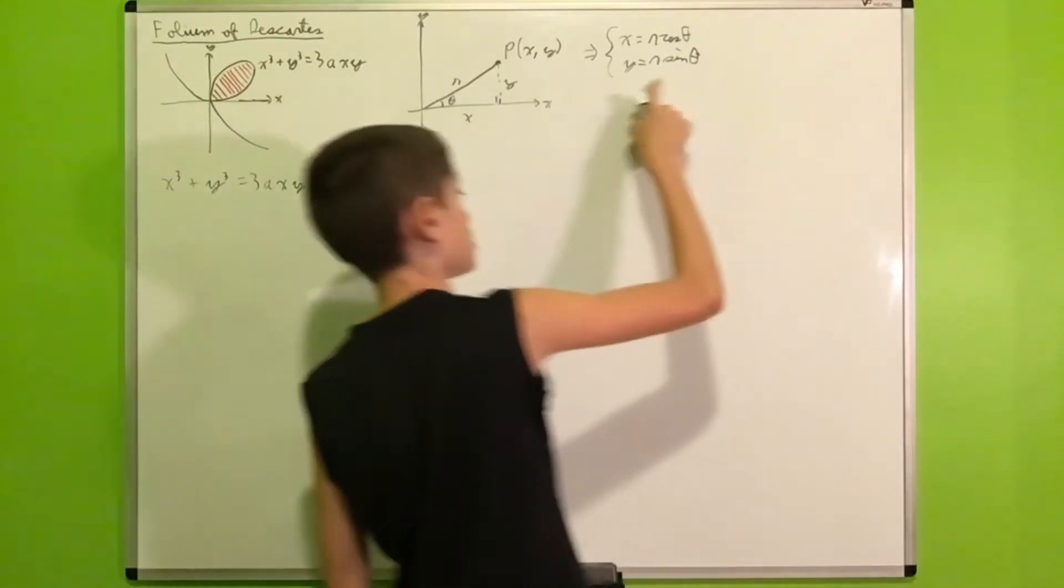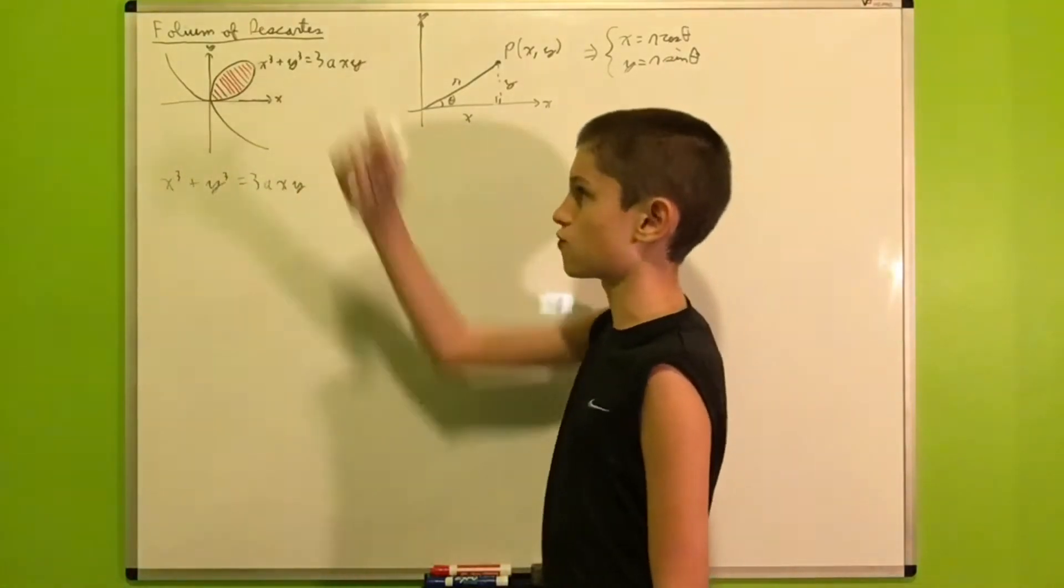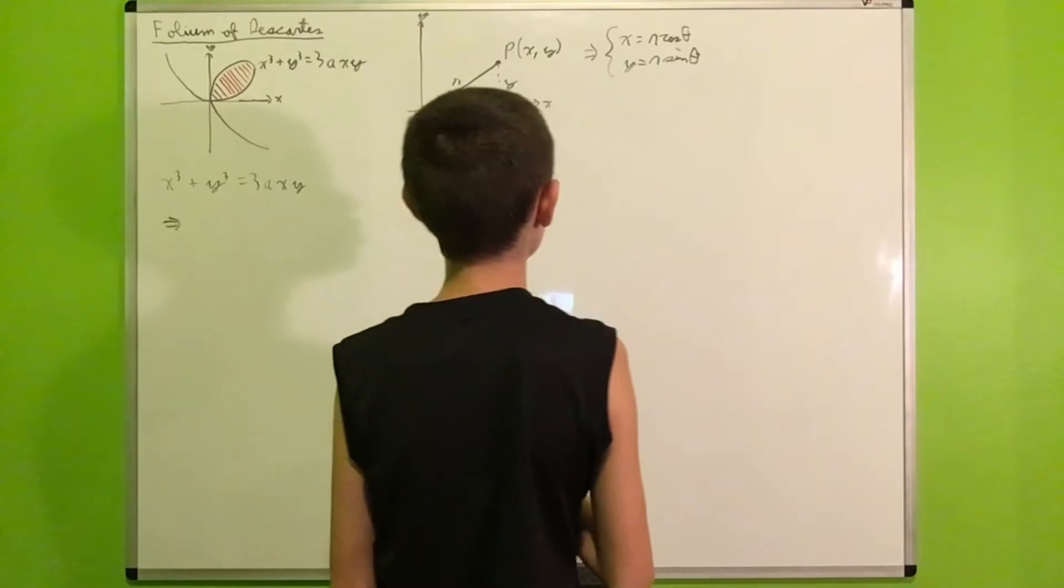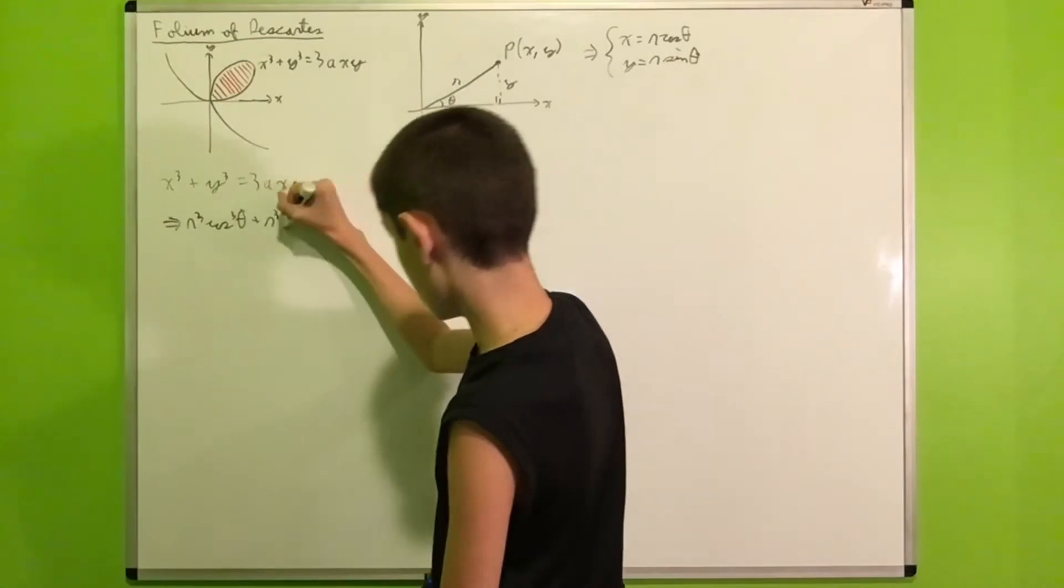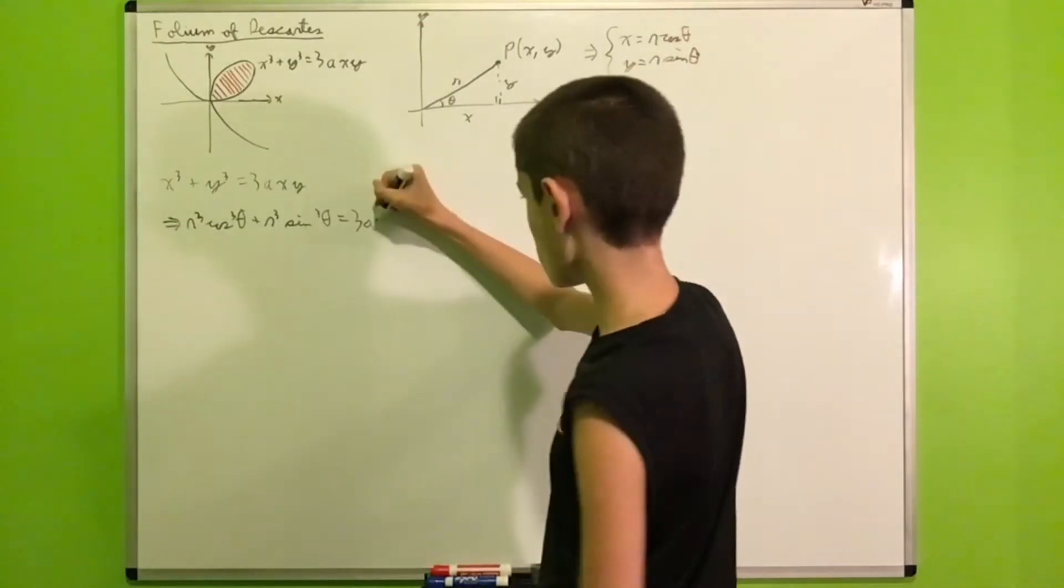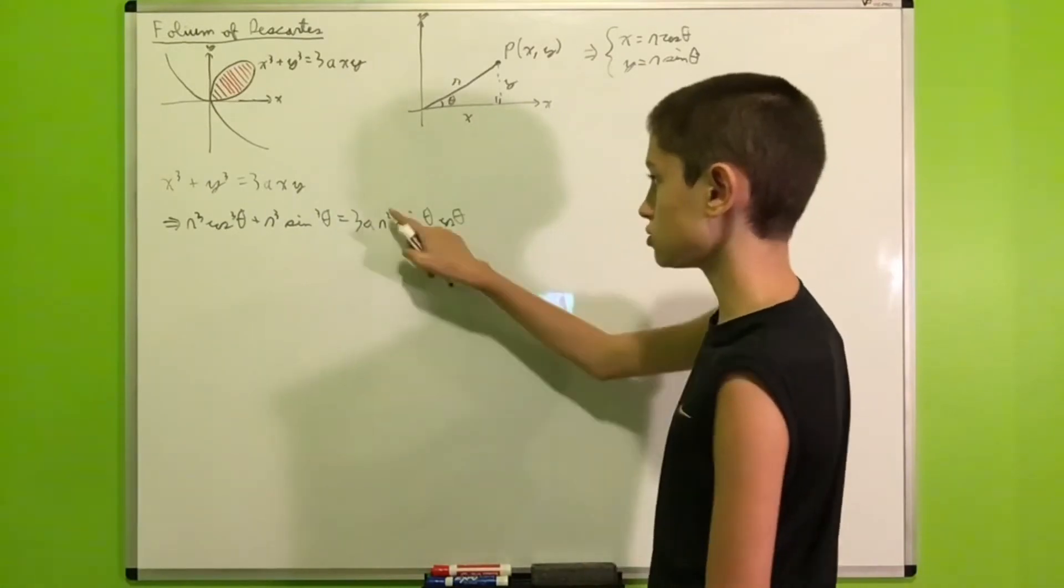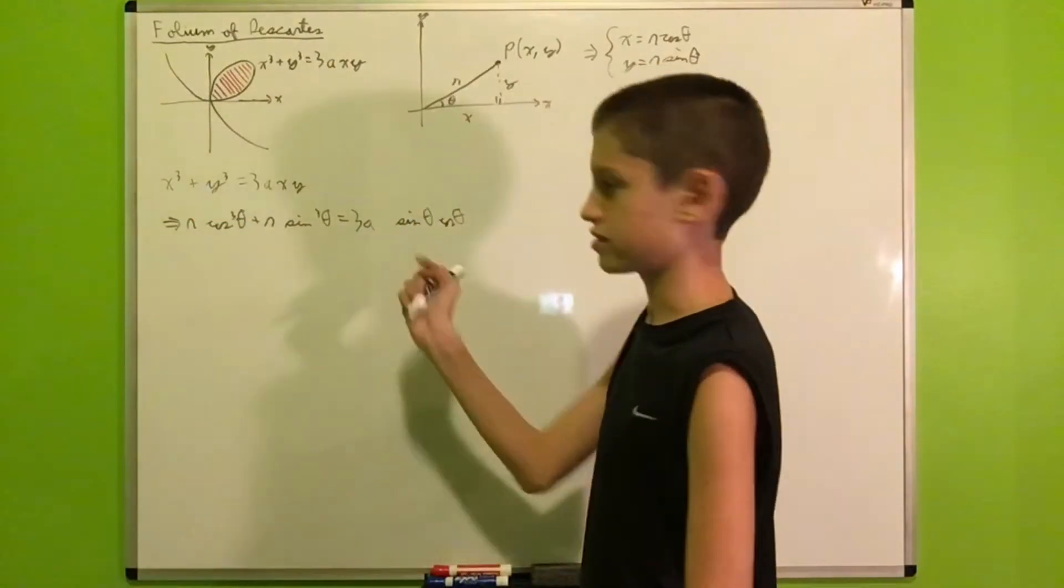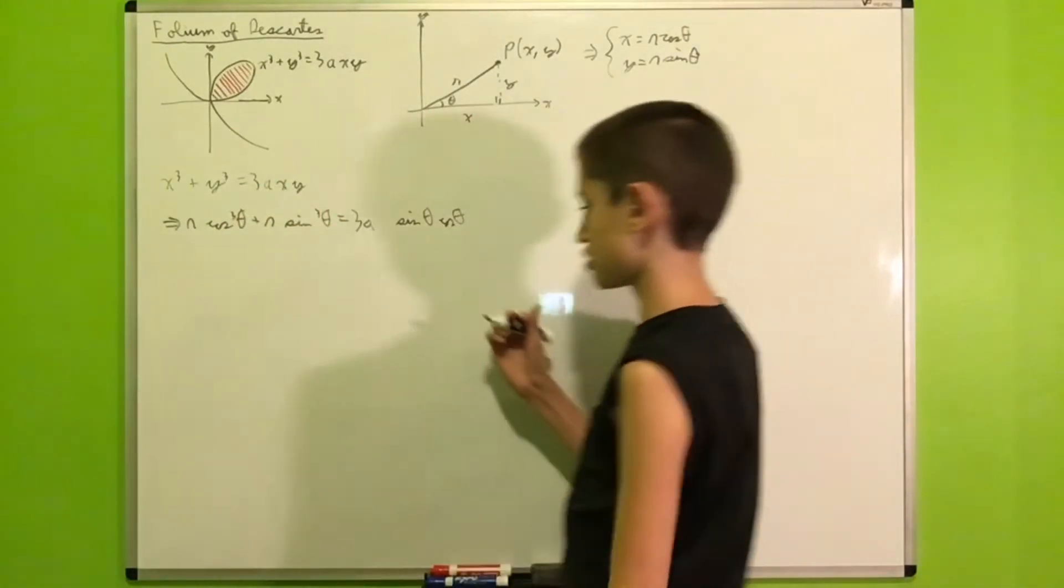So let us substitute these two equations into our Cartesian equation for the folium of Descartes. So we get x cubed, which is R cubed cosine cubed theta plus R cubed sine cubed theta equals 3a times R squared times sine theta cosine theta. And now, we'll divide both sides by R squared, leaving R. And then we can just factor out an R and divide both sides by cosine cubed theta plus sine cubed theta.